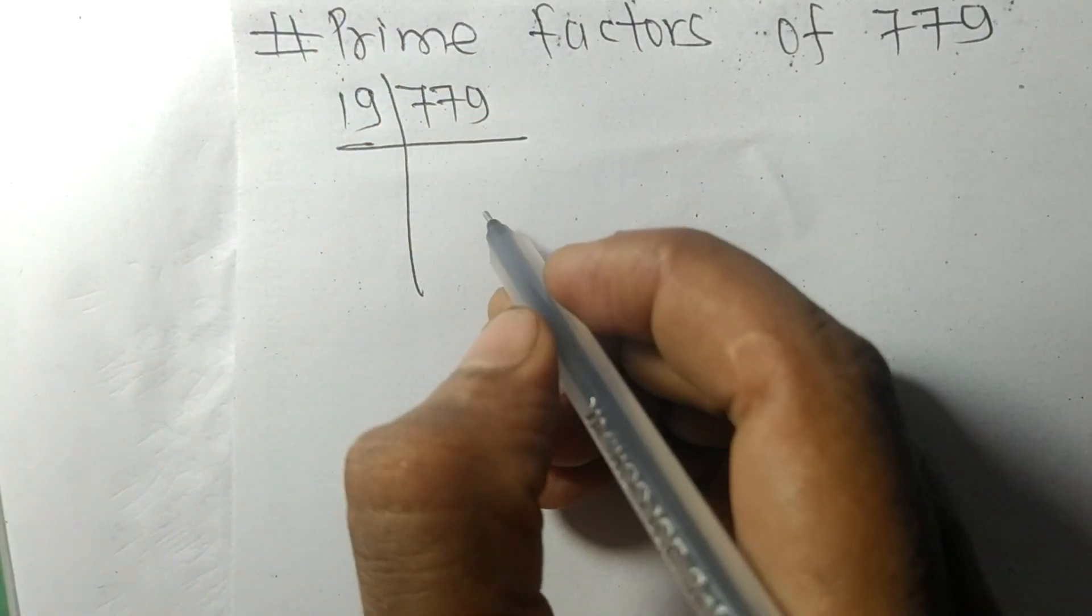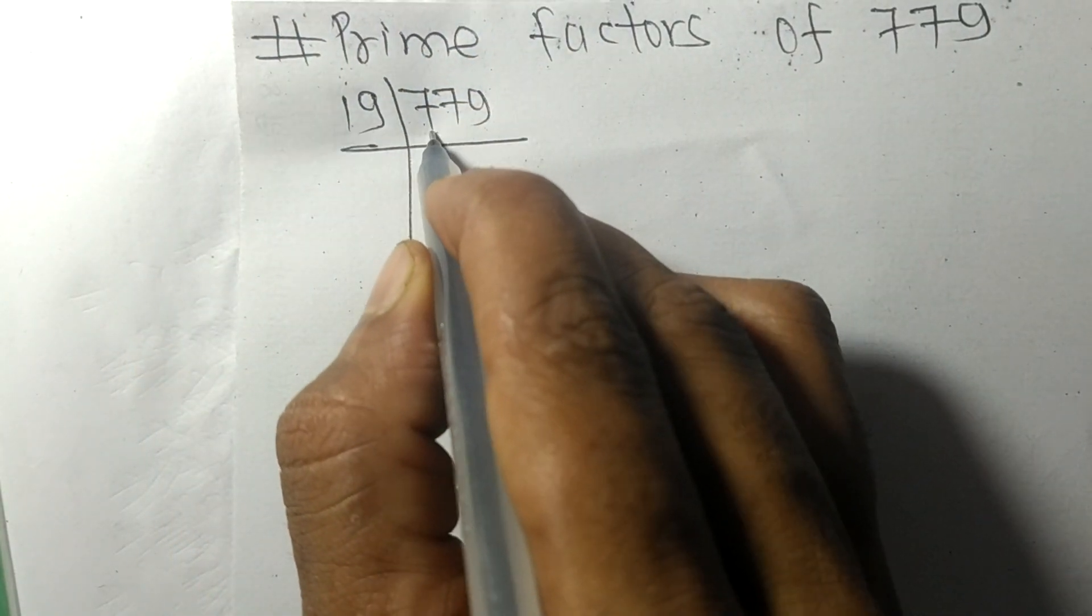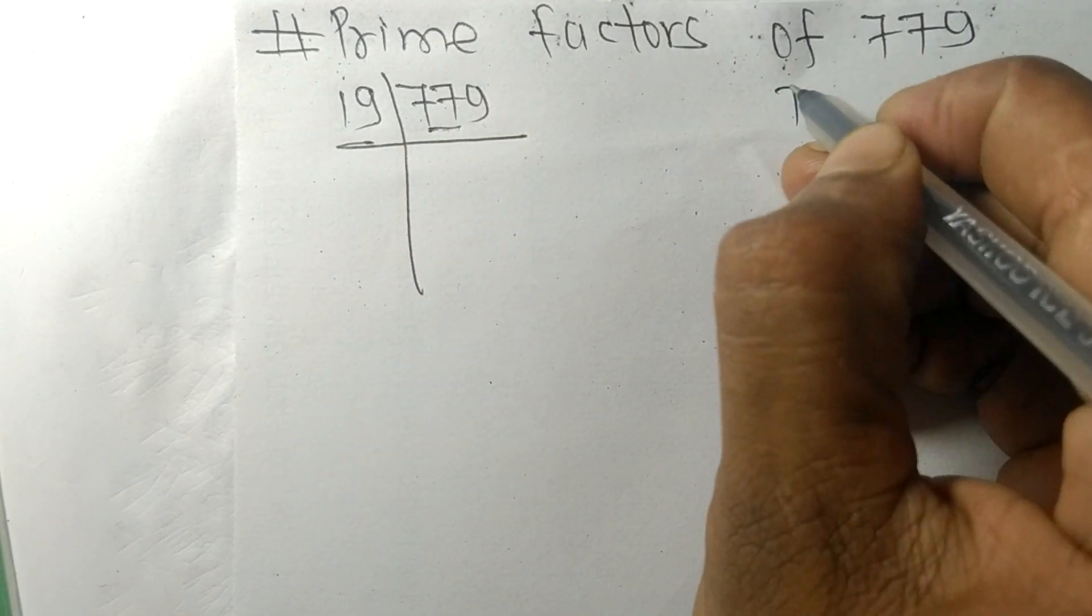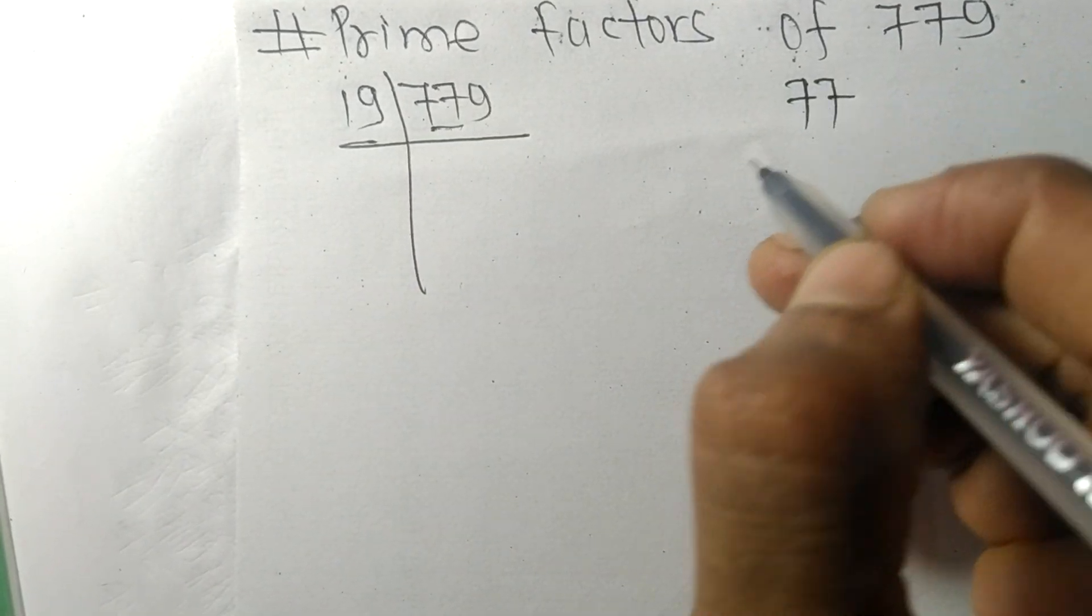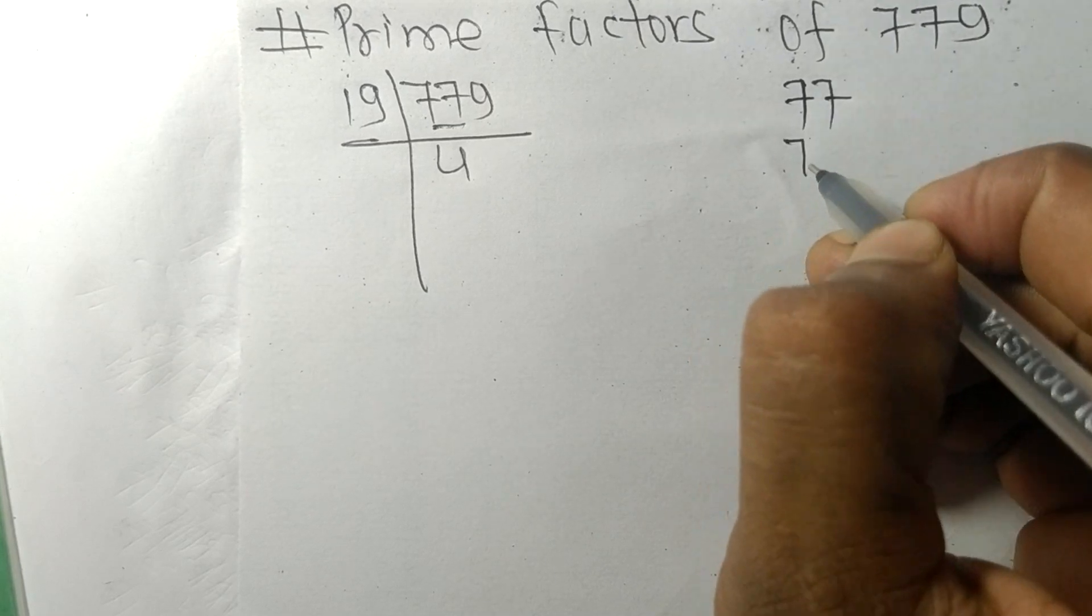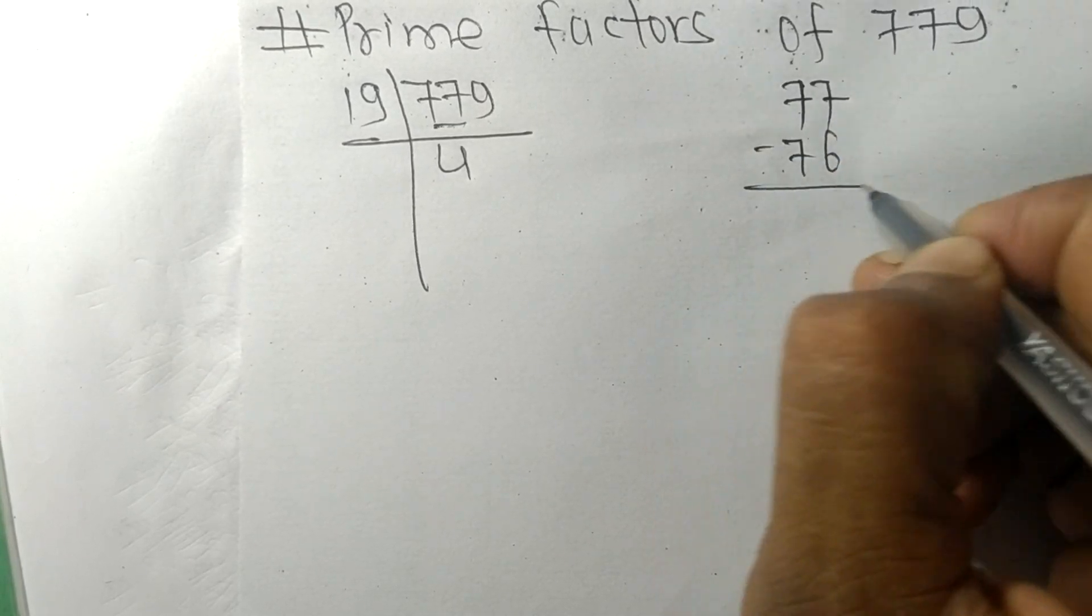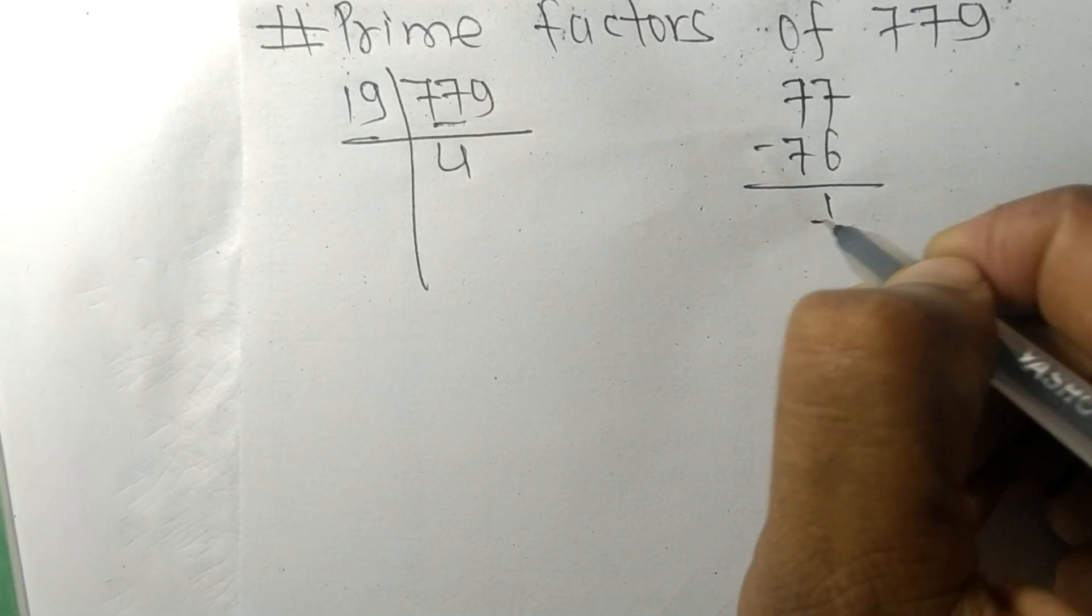First we have 77. 19 times 4 means 76. On subtracting we get 1.